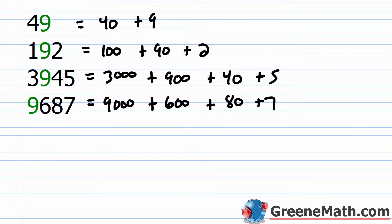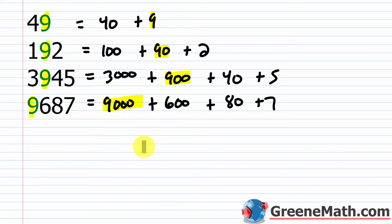We have a 9 in each number. Now look at it in the expanded form of each number. In the first number, 49, the 9 is in the ones place, so its value comes from 9 times 1, which is 9. In the next number, 192, this 9 is in the tens place, so it's 9 times 10, or 90.